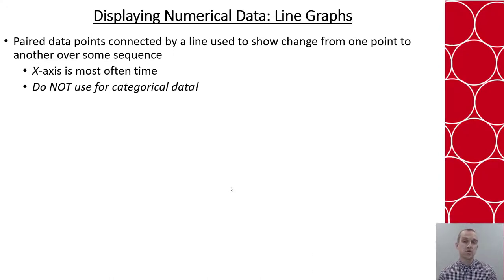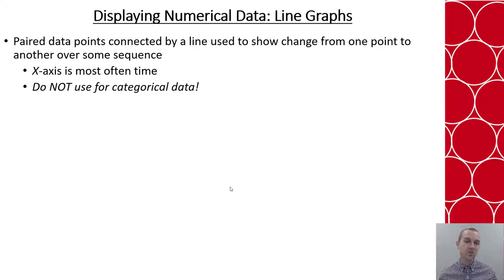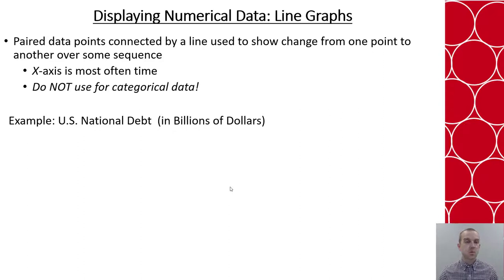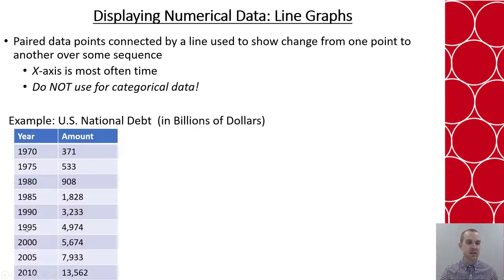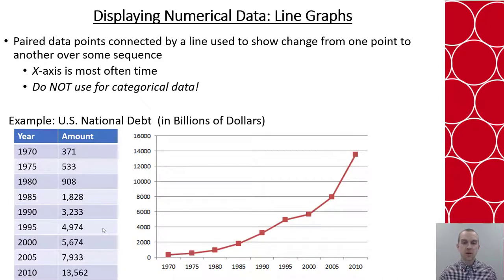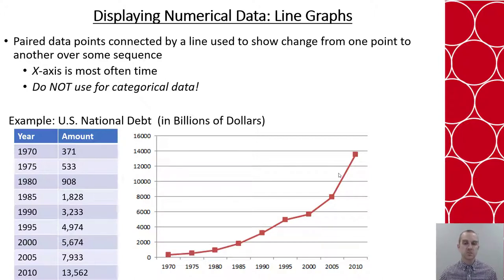One of the most common ways to display numerical data is through line graphs. These are created using paired data connected by a line that shows how one point changes from the previous point over a sequence — most commonly over time. We cannot use this for categorical data. We're often using it to see how something changes over time or over the number of times something is attempted. For example, the U.S. national debt from 1970 to 2010 every five years in billions of dollars. Creating the line graph helps see what that growth looks like — you can see it starts to curve, not just linear growth — which could allow for other types of analysis.